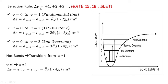The selection rules are ΔV = ±1, ±2, ±3. Some questions based on these were asked in GATE and SLATE. The transition V = 0 → V = 1 corresponds to the fundamental line. V = 0 → V = 2 is the first overtone, V = 0 → V = 3 is the second overtone, and so on. Hot bands are transitions starting from V = 1, for example V = 1 → V = 2.